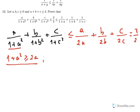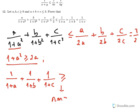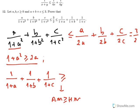For the second part, we have 1 over (1 plus A) plus 1 over (1 plus B) plus 1 over (1 plus C). If we apply the AM-HM inequality here, arithmetic mean is greater than harmonic mean. Now we have 3 terms, so I should divide by 3. Recalling the harmonic mean formula, I will have 9 in the numerator, and in the denominator the sum: (1 plus A) plus (1 plus B) plus (1 plus C).